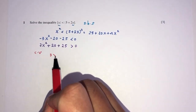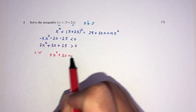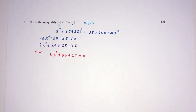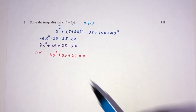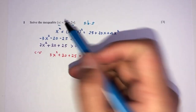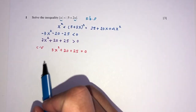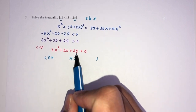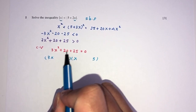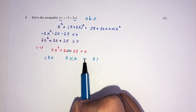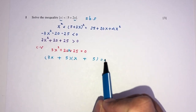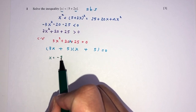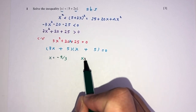We just take the same equation and equate it to 0. We did not include 'equal to' because we don't have that here. Now we can factorize: that will be 3x times x, 25 is 5 times 5. To get plus 20x, that will be plus 15 plus 5. So x has to be the value of minus 5 over 3, and x has to be minus 5.